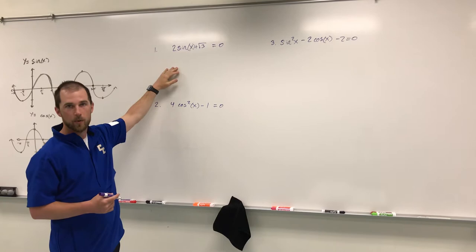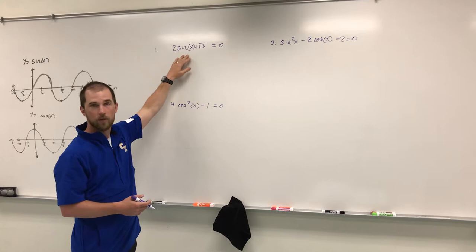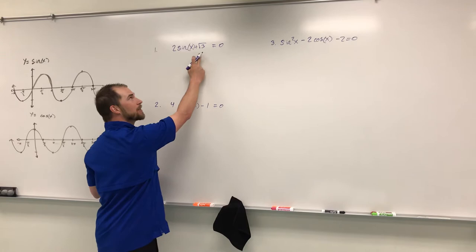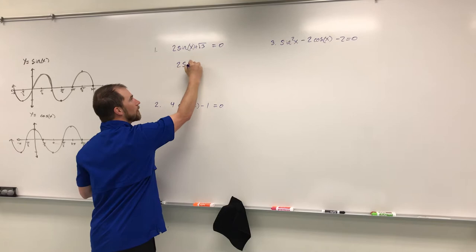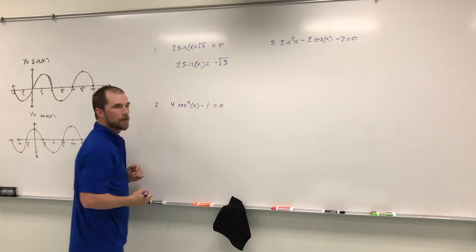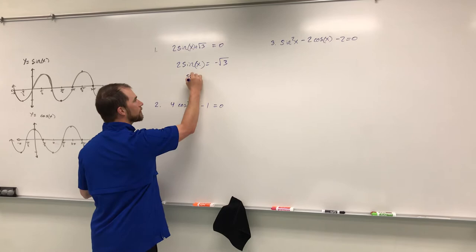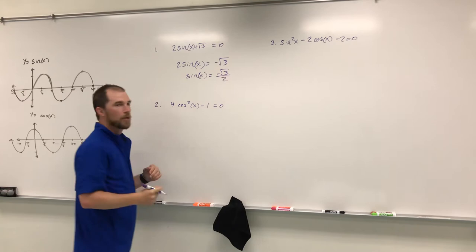The first problem: we have two sine x plus the square root of three. Just like before, when solving, we're going to isolate our trig function — sine x. We need to get sine x by itself. The first step is getting rid of the square root of three, giving us two sine x equals negative square root of three. Then we divide by two, so sine x equals negative square root of three over two.